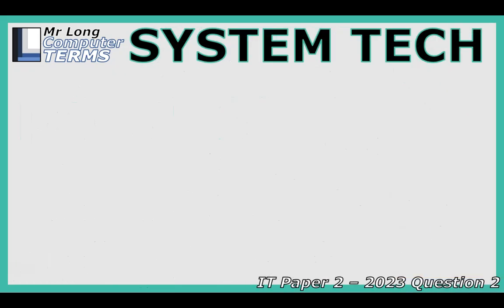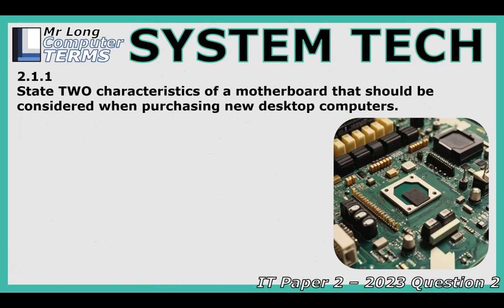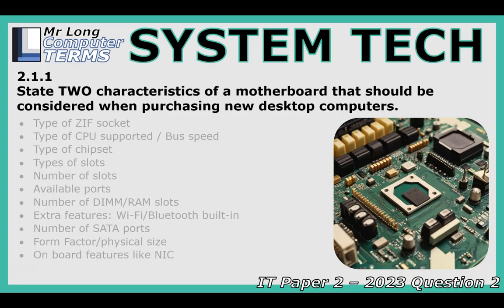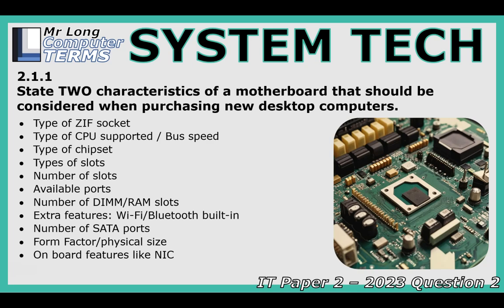The motherboard is the foundation — it connects everything. First, the ZIF socket type is the holder for the CPU, the brain, and crucially the socket type must match the CPU you want to use. The board also dictates the CPU type and its bus speed — how fast data moves between the CPU and other components. Faster bus speed generally means a snappier system. The chipset acts as the motherboard's traffic director, managing communication between the CPU, memory, RAM, and expansion slots.